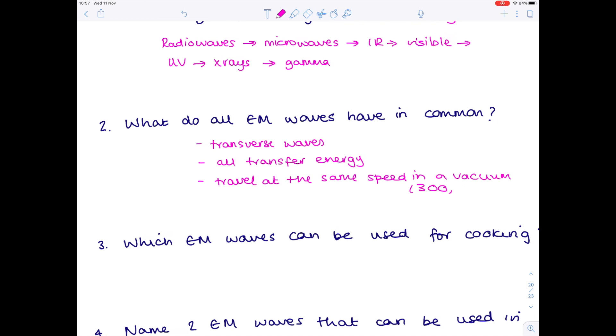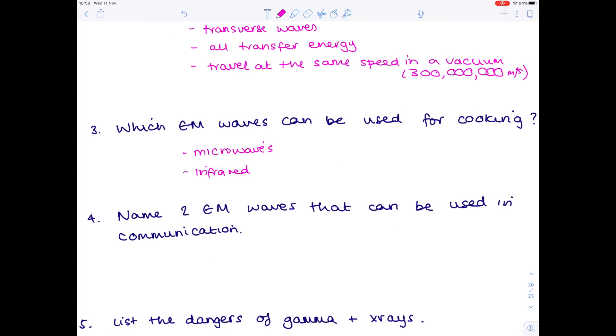Which EM waves can be used for cooking? The obvious one is microwaves, and the second is infrared radiation. Name two EM waves used in communication. You've got lots of options - the ones with longest wavelengths are most useful: radio waves, microwaves, and you could also include infrared and visible light.